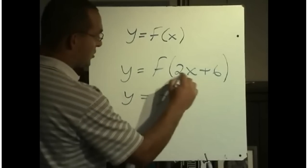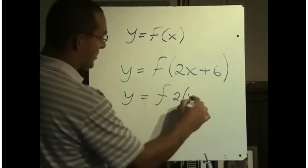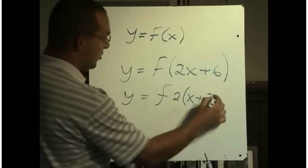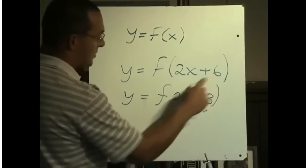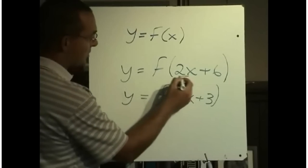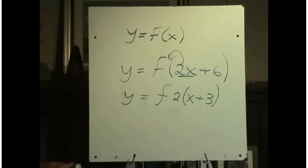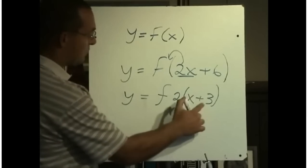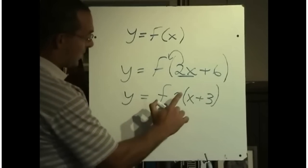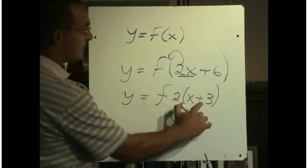We need to make sure that we have the coefficient of x. The coefficient is the number in front. This number has to be factored outside of this bracket before we can accurately tell what our translation is. So when I factor the 2 out, that would leave x plus, not 6 anymore, but 3, because 2 times x is 2x and 2 times 3 is 6. So we have a horizontal compression by a factor of one half, and then it is moved to the left 3.